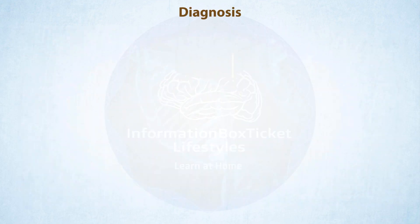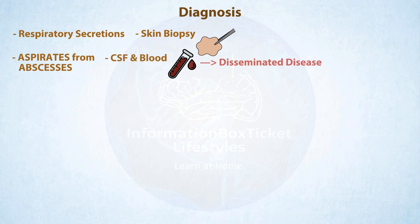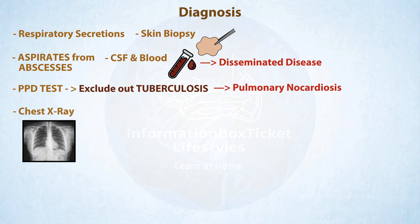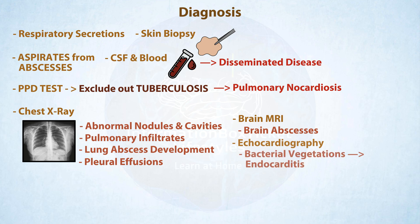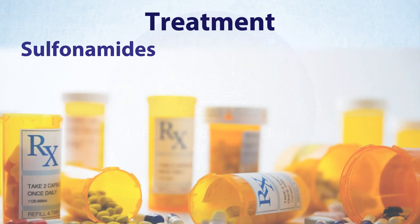Nocardia is diagnosed in smears or cultures of respiratory secretions, skin biopsy samples, aspirates from abscesses or CSF, and blood in cases of disseminated illness. When pulmonary nocardiosis is suspected, a PPD test should be performed to rule out tuberculosis, as the symptoms are almost identical. A chest X-ray can be used to detect abnormal nodules, cavities, pulmonary infiltrates, lung abscess development, or pleural effusions. A brain MRI can also be used to detect brain abscesses, while an echocardiography can reveal bacterial vegetations on the heart, confirming endocarditis.